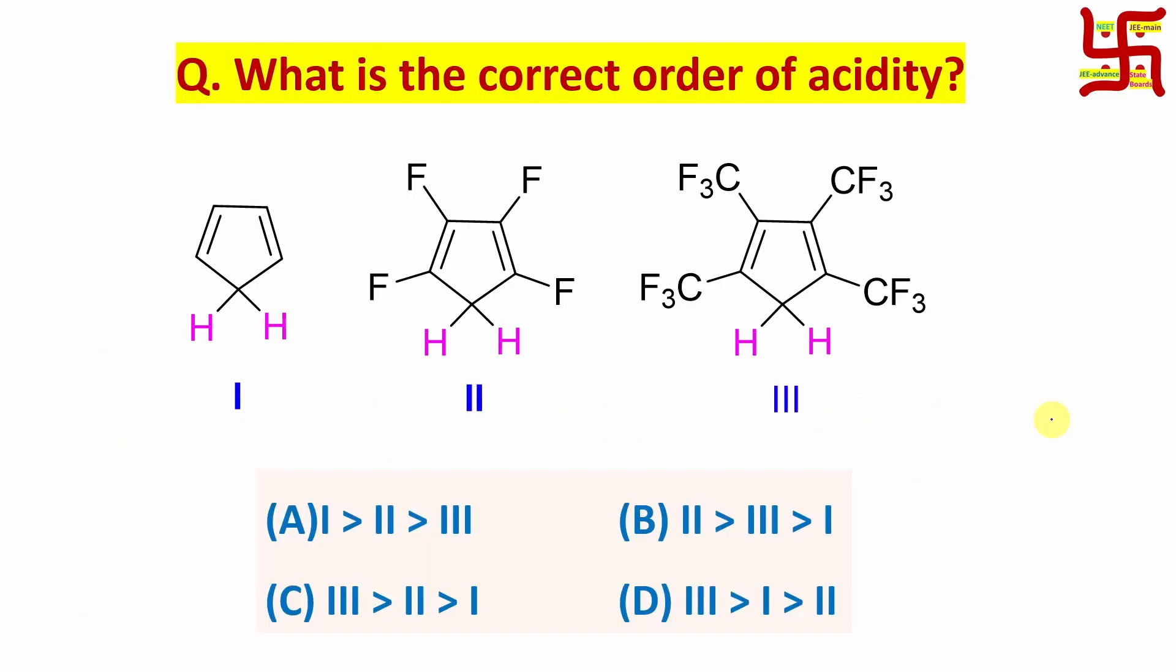So what is the answer? Answer order will be three greater than two greater than one. So option C. Now, if you don't know the exact thing but you know little information, how can you come up to the right answer using process of elimination?